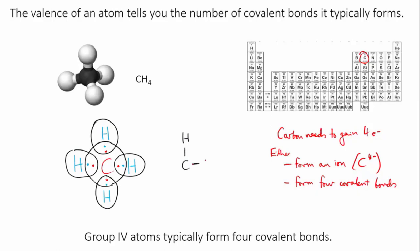If carbon formed fewer than 4 bonds, it would not have access to enough electrons to make a full shell. If it formed more than 4 bonds, it would have too many electrons to fit in its outer shell. So carbon almost always forms 4 bonds.